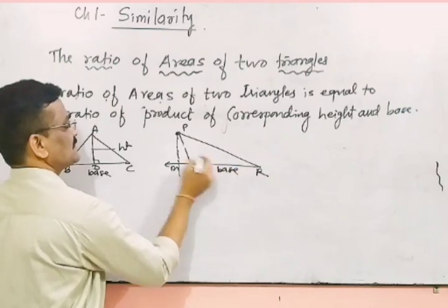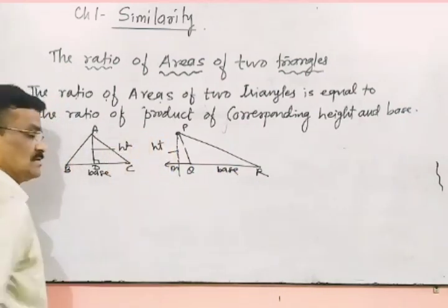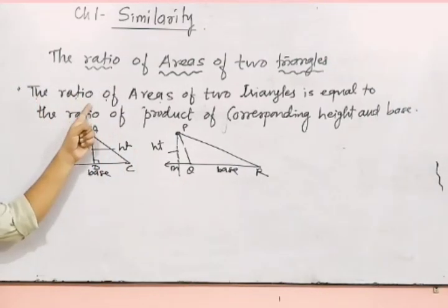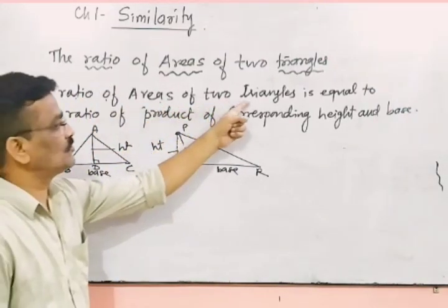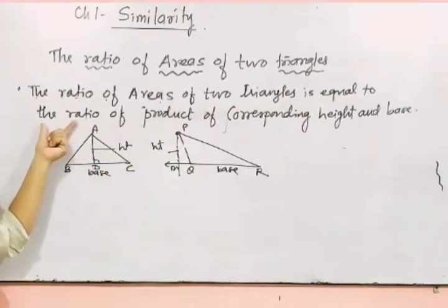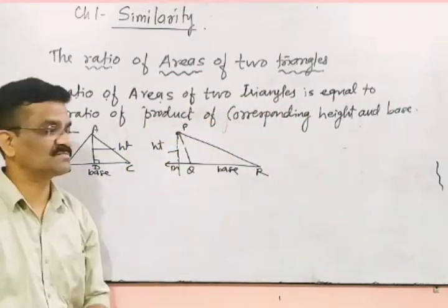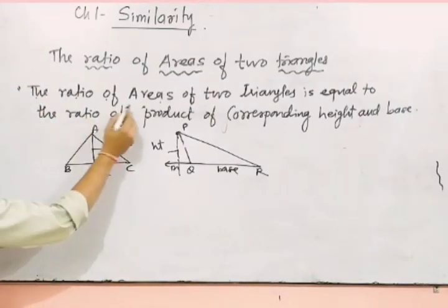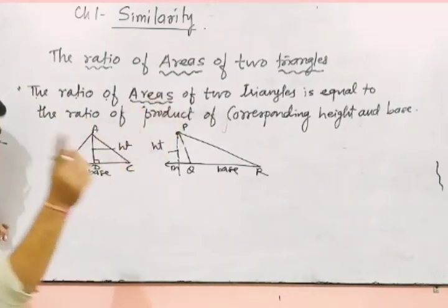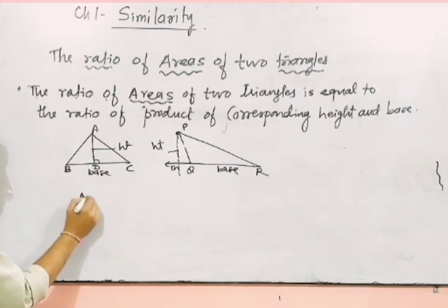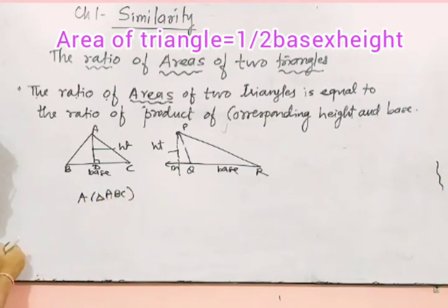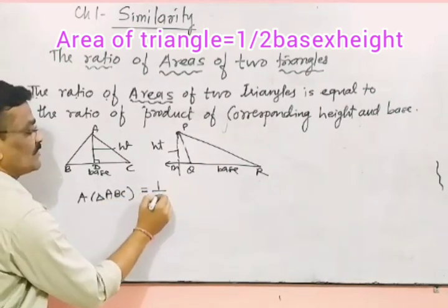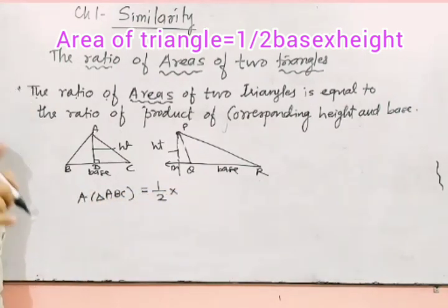This will be base and this will be height. So first topic of this chapter is the ratio of areas of two triangles is equal to the ratio of product of corresponding height and base. Area of triangle ABC is half into base into height.